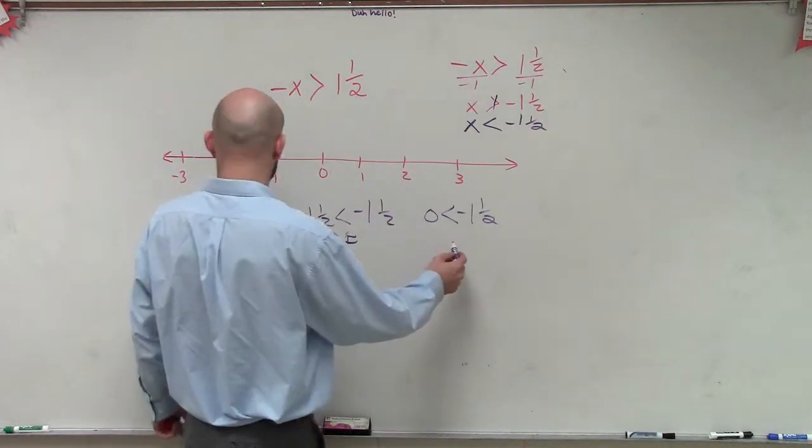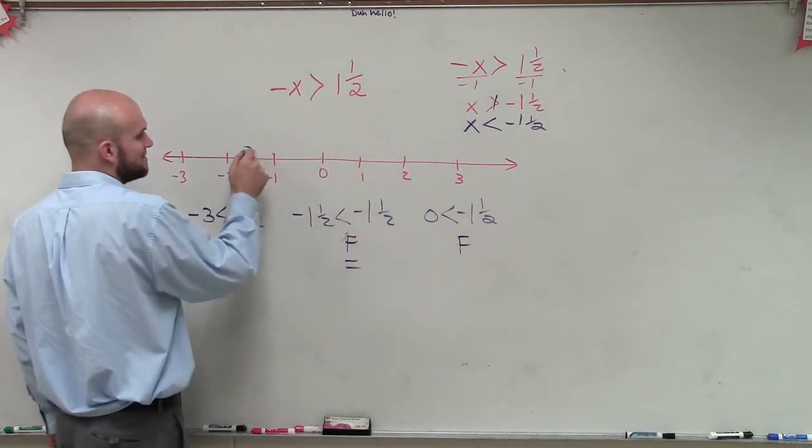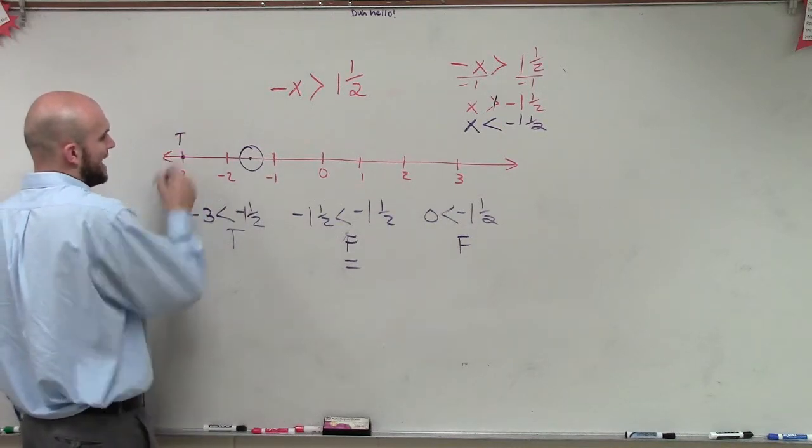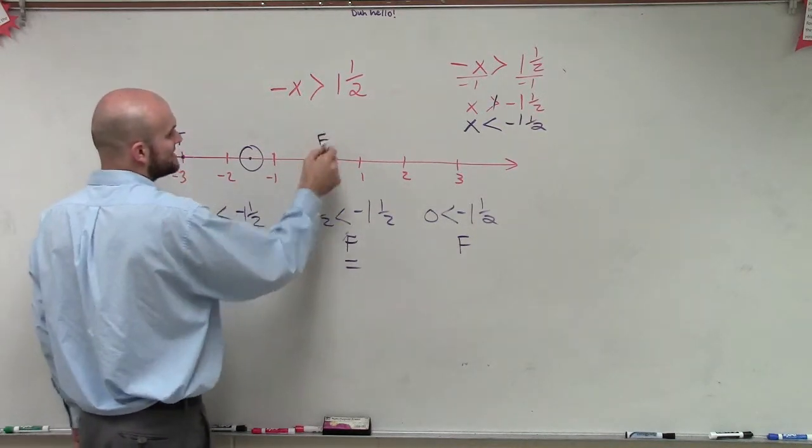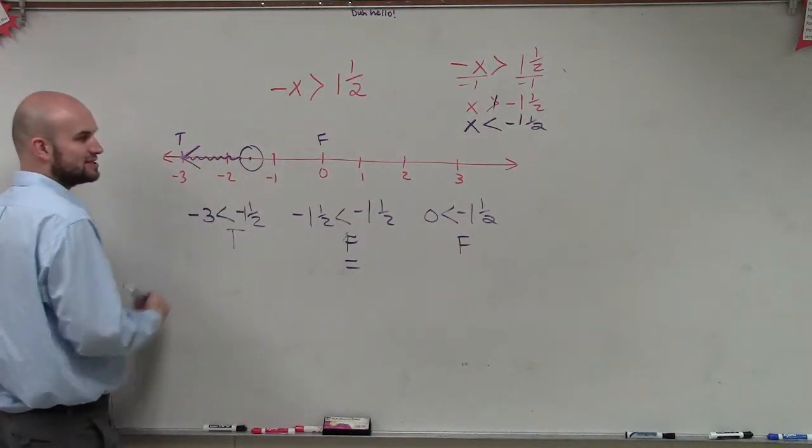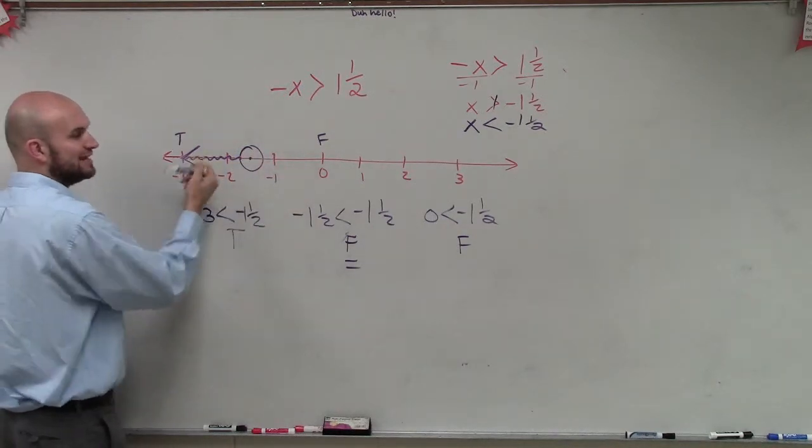When the point that I'm picking is false, that means I'm going to have an open circle. But since it's true at negative 3 and false at 0, I shade now towards where it's true. So my final answer is going to be an open circle at negative 1 and 1 half and then shading to the left.